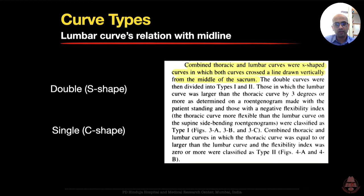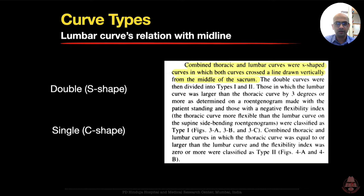The authors defined combined thoracic and lumbar curves as S-shaped curves in which both curves crossed the midline drawn vertically from the middle of the sacrum. This vague definition of the double curve created a lot of controversy later. They did not clearly define what it means to cross the midline.